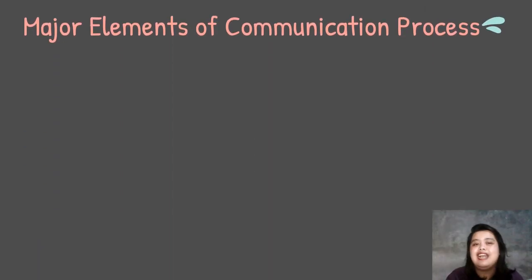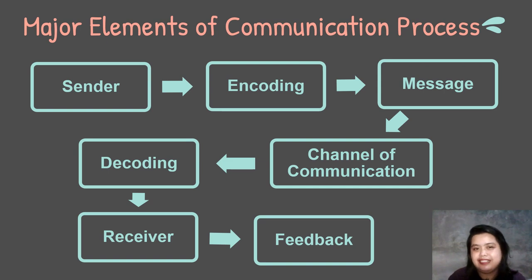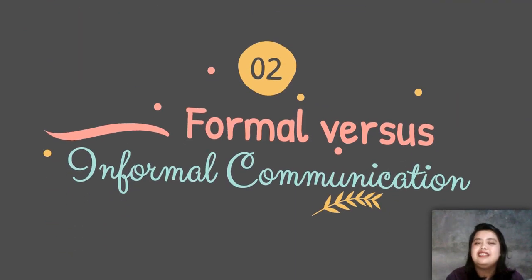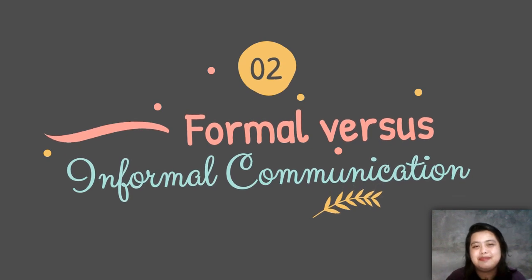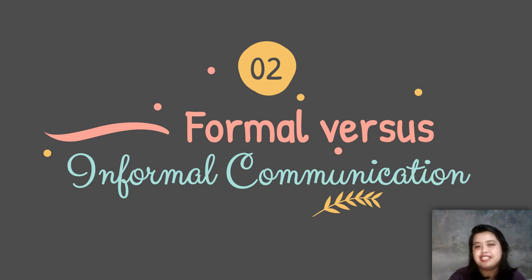Let's review. The seven major elements of the communication process are: sender, encoding, message, channel of communication, decoding, receiver, and feedback. In our next video, we will discuss and differentiate formal and informal communication — that will be our next topic.